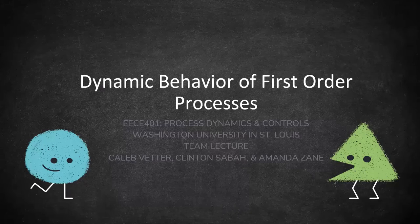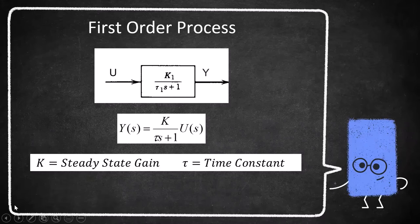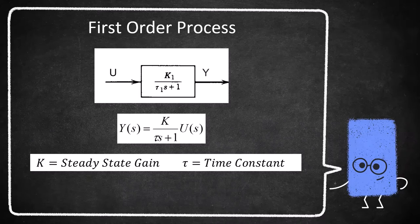Hello, and welcome to our lecture on the dynamic behavior of first-order processes. A first-order process is a process whose dynamic behavior can be modeled using a first-order transfer function, as shown here, where u is the input and y is the output.